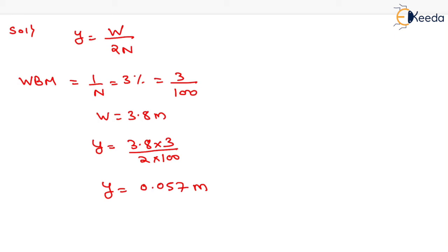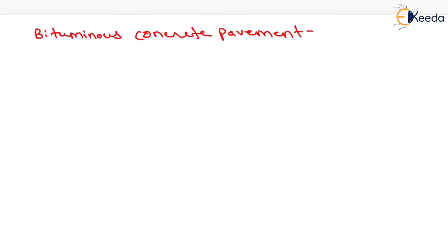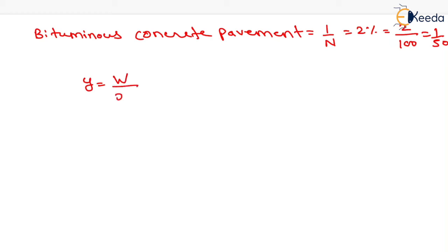Now we move to the next case, that is for bituminous concrete pavement in heavy rainfall area. For bituminous concrete pavement, the Camber is equal to 2%, so we can write it as 2/100, which equals 1/50. The equation of straight line Camber is y = w / 2n.